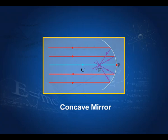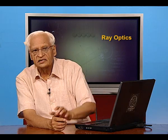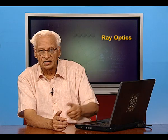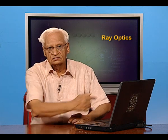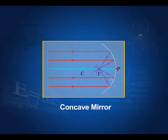Why is the focal length negative? Because we assume the light to come from the left, get reflected from the mirror, and meet at point F. This distance PF is measured from P. All distances measured to the right are negative and to the left are positive. So PF is negative. Therefore, the focal length of a concave mirror is negative.